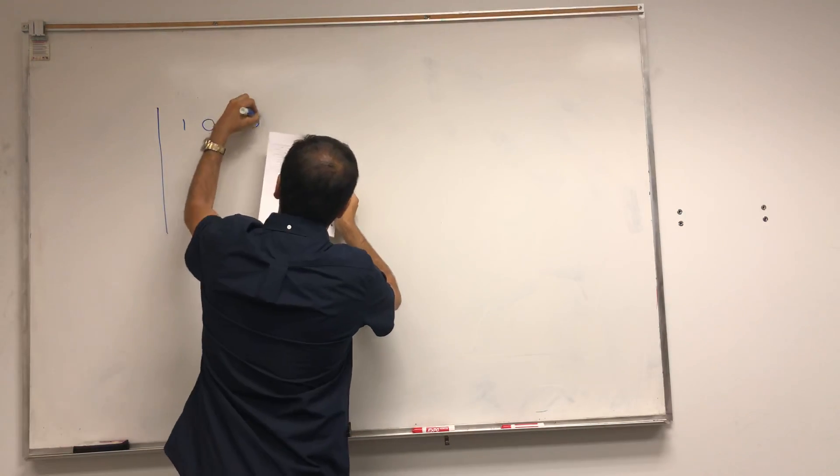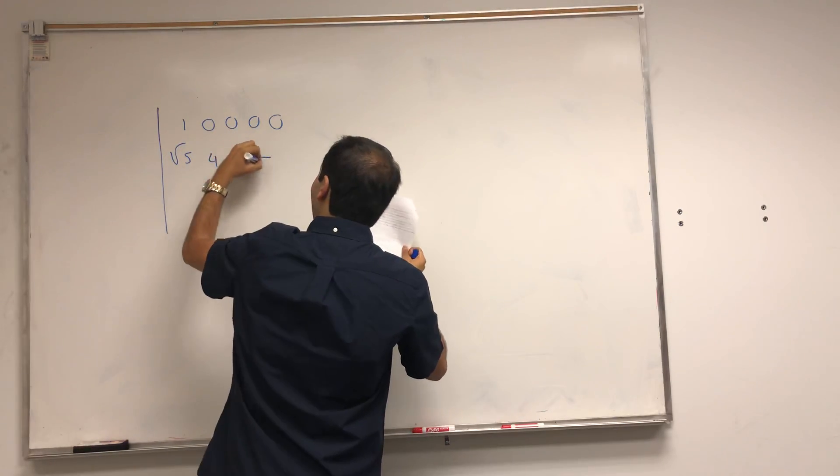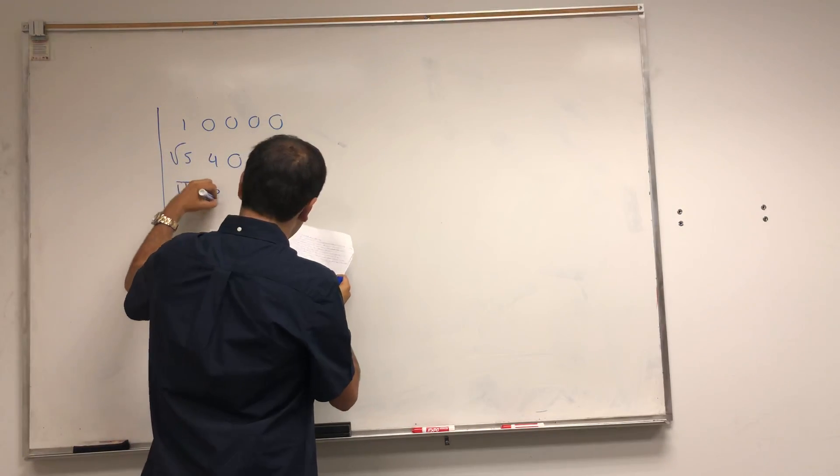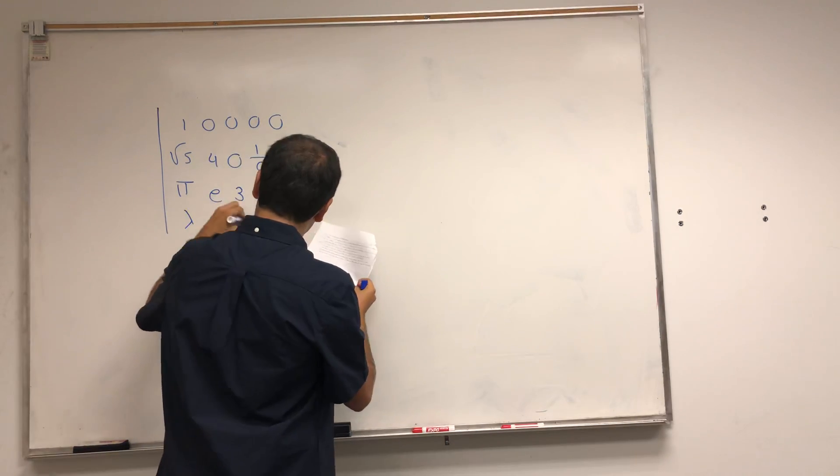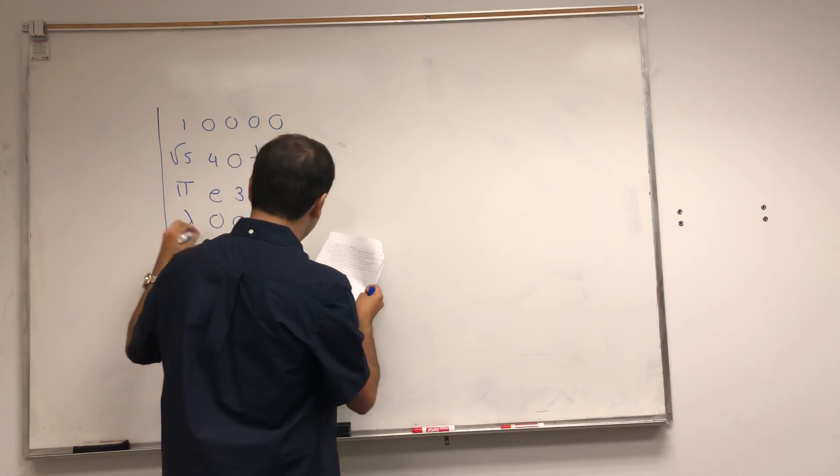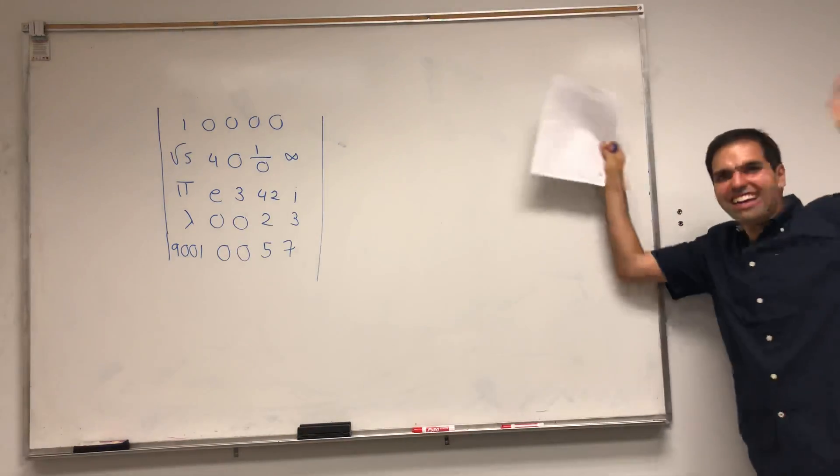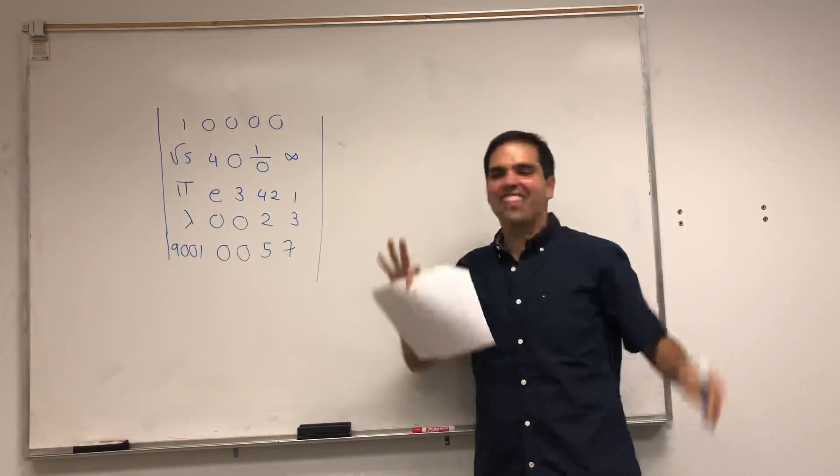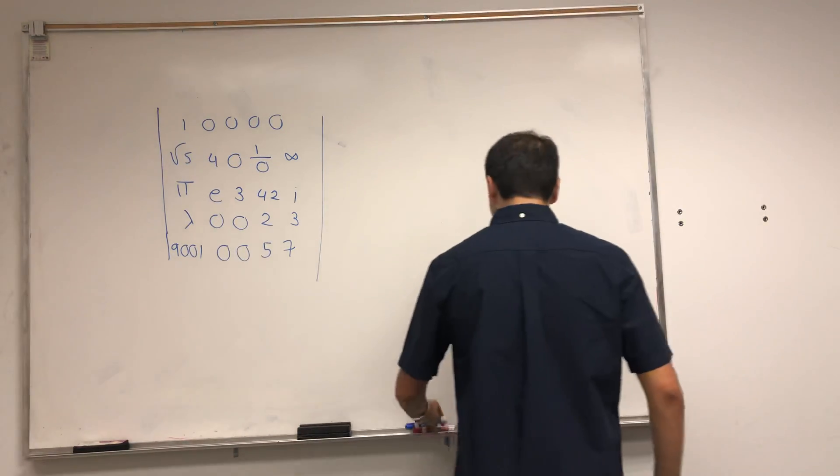Let's evaluate the following crazy determinant. One, zero, zero, zero, zero, square root of five, four, zero, zero, one over zero, infinity. Oh my God. Hopefully they disappear. Pi, E, three, 42, all right? Lambda, zero, zero, two, three, 9001, because it's over 9000, zero, zero, five, seven. Oh my God, this is horrible. You should have this emoji with the scared thing, okay? But it turns out it's not too bad to do because there are a lot of zeros.